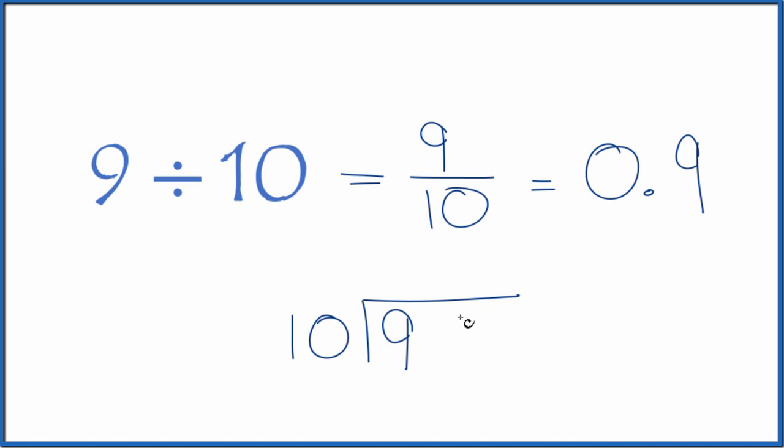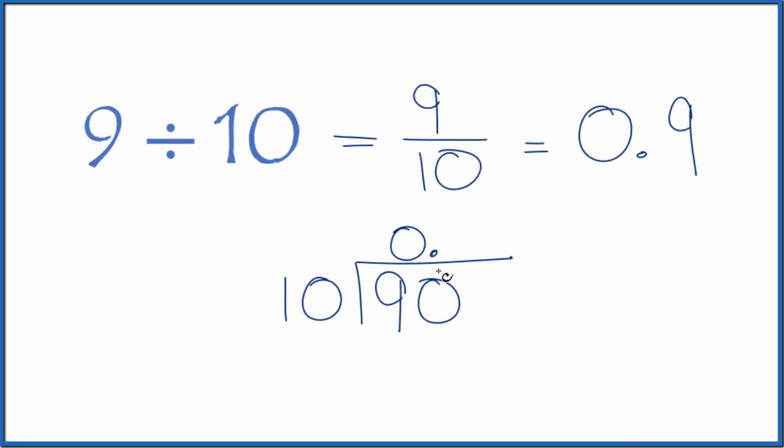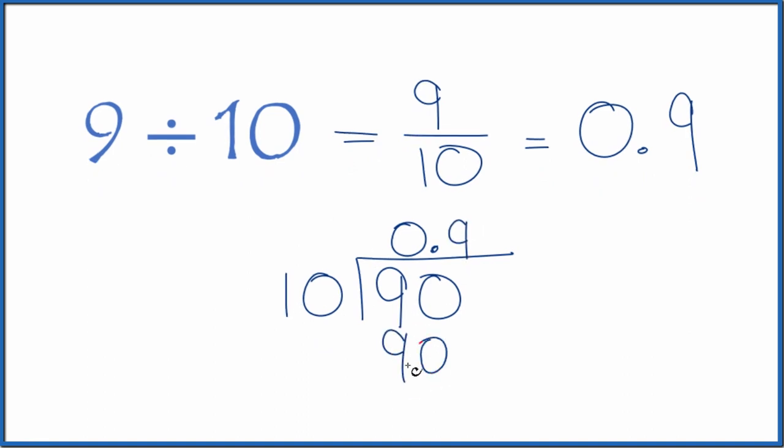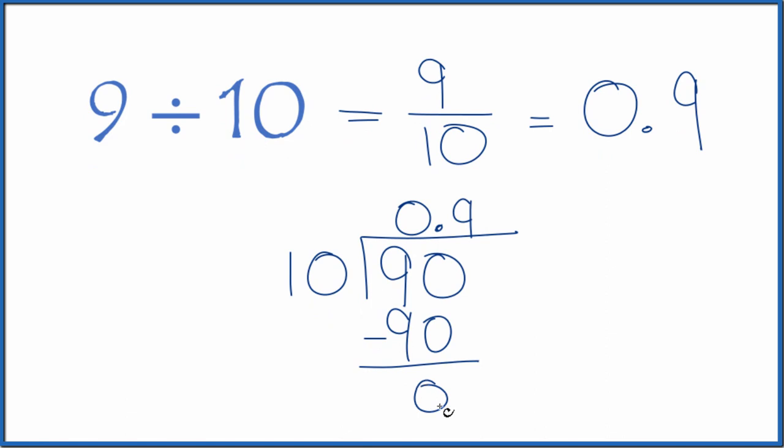10 doesn't go into 9. Let's call it 90 and put a zero with a decimal point. Now we could say 9 times 10, that's 90. 90 minus 90 is 0, so no remainder. 9 divided by 10 is 0.9.